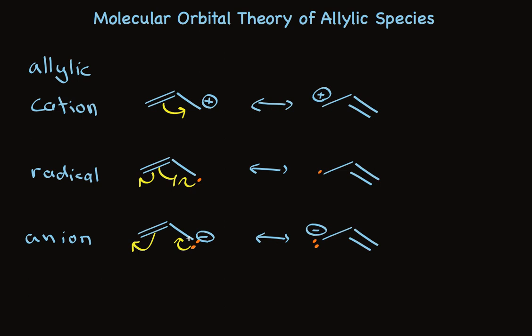Molecular orbital theory gives us insight into both why allylic systems are more stable and quantitatively about how much more stable. So, take a look.